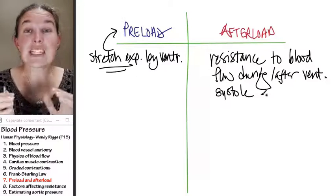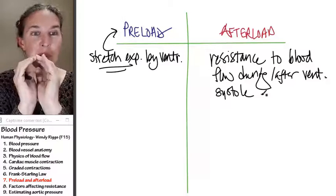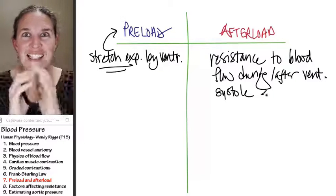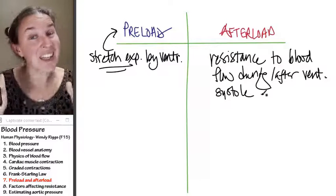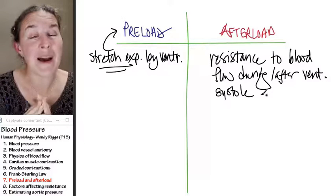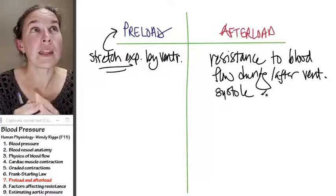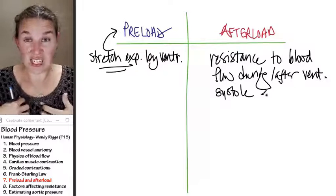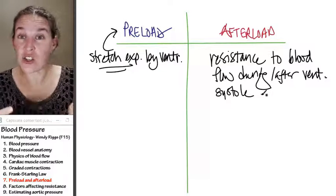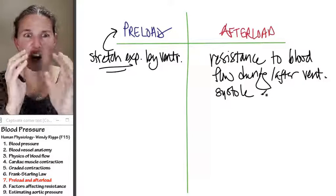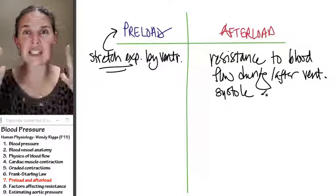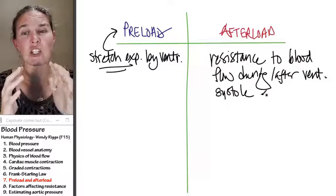Afterload is greater if the blood vessels are not elastic, and that's something that happens when you get heart disease, when you get cardiovascular disease, arteriosclerosis is the hardening of the arteries, and they become less elastic. They can't adjust to the changes in pressure.